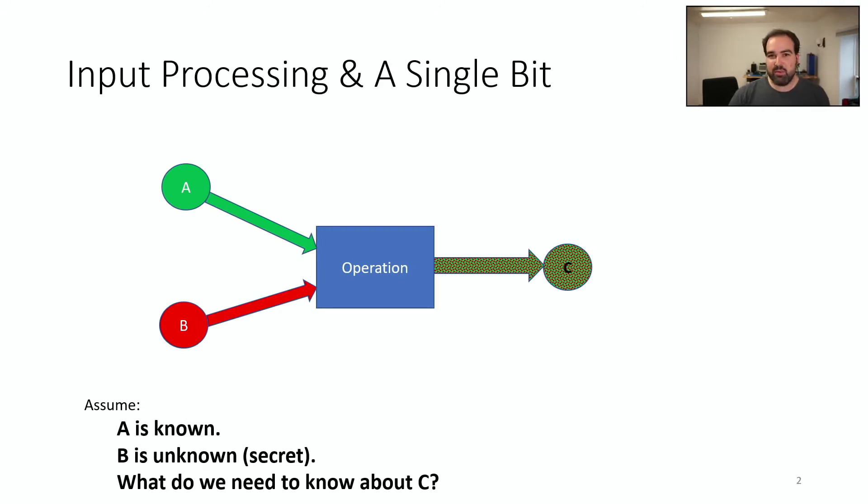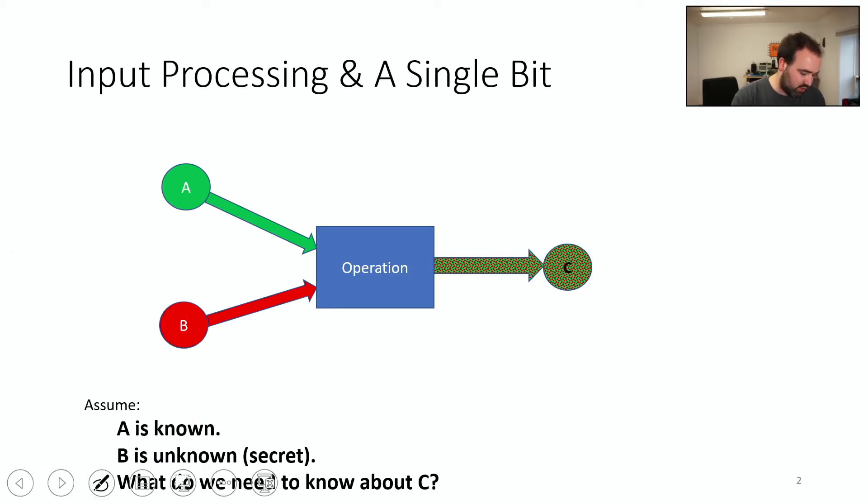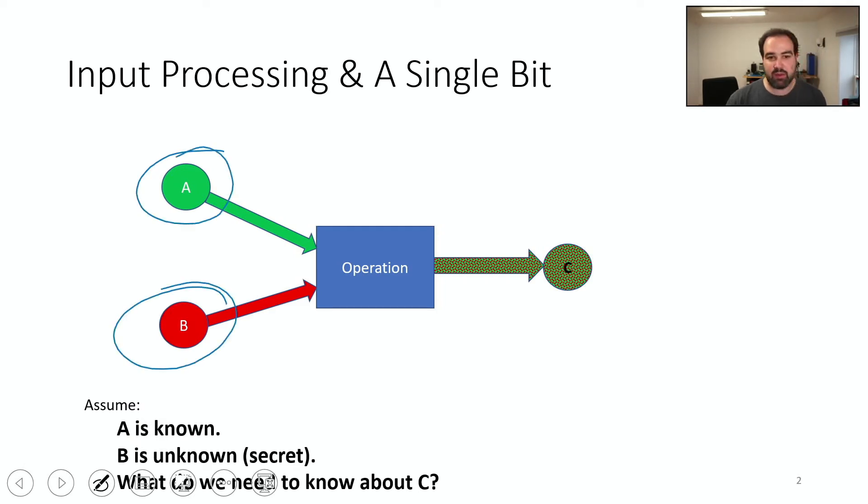And what we're going to assume, so this is going to be very general to start with, is we have this data being processed by an operation. We have data A, we have data B. So data A is here, data B is here. And let's say data B is unknown. So we don't know what that is, but we do know what data A is.